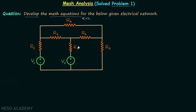In the given network, six resistors and two voltage sources providing V1 and V2 are present. In this question we are only required to develop the mesh equations or the KVL equations. This means we only need to perform the first, second, and third steps of mesh analysis. There is no need to perform the last step in which we calculate the mesh currents by solving the KVL equations.